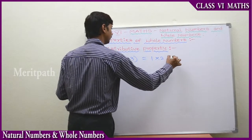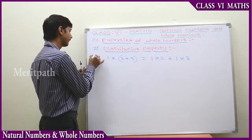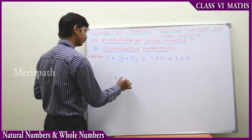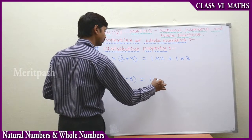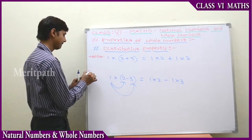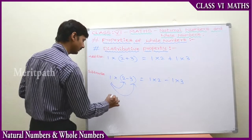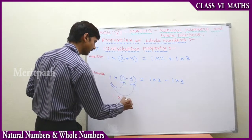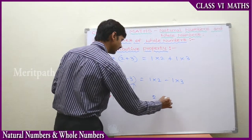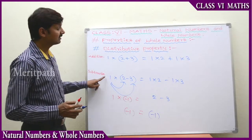Using the distributive property: a into b plus c equals a into b plus a into c. For the same example, we will take it for subtraction — this was for addition. For subtraction: a into b minus c equals a into b minus a into c. Let's verify. Taking b equals two and c equals three: two minus three is minus one, so a into minus one is minus one. And a into two minus a into three gives two minus three equals minus one. We got minus one on both sides, so the value is equal. This is multiplication over subtraction.